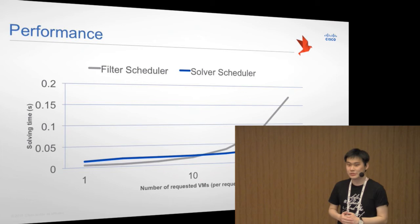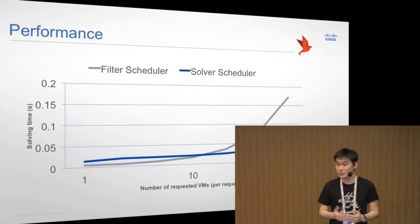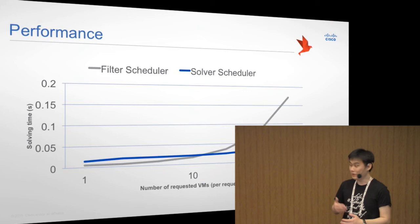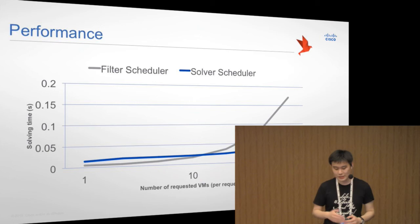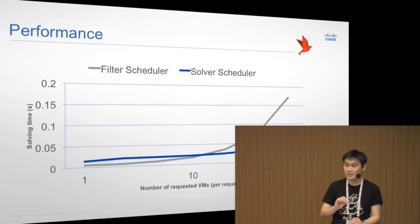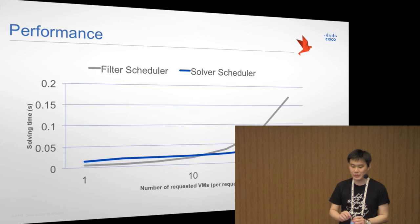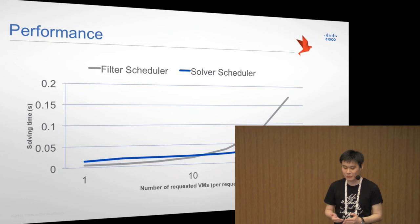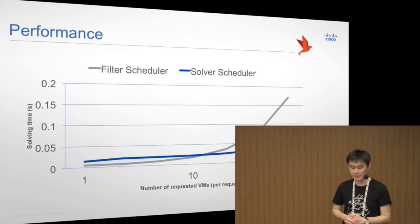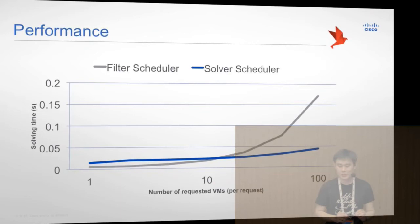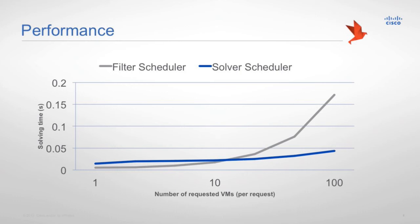You may wonder what is the performance of our scheduler. Well, I would say that the performance really depends on the actual solver you are using and the actual use cases. But here, I would just give a general idea of how it works with the default scheduler we have developed. You can see that if you have a small number of VMs in each request, the solver scheduler actually runs with slightly more expensive performance than filter scheduler. However, the difference is very small. But, however, if you have more VMs and lots of VMs in a single request, then you may save more time with solver scheduler. But, anyway, I think in terms of the number, both filter scheduler and solver scheduler are within the acceptable range. So, there should be no worry about the performance with the solver scheduler.